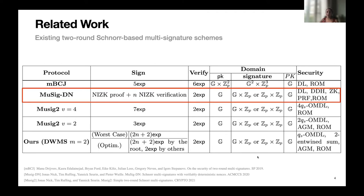Another interesting protocol is MuSig2-Tian. It has a different approach to prevent adversarial choice of randomness. It is based on deterministic nonces so that the adversary has only one option to choose its randomness. However, it requires many heavy zero-knowledge proofs in the signing process, so the signing process is not efficient.